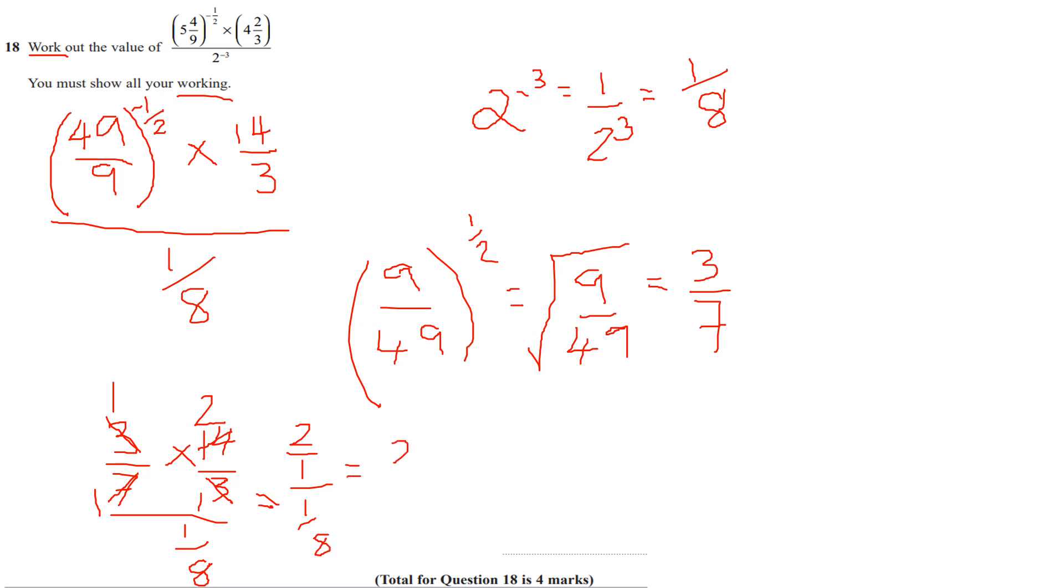Which is the same as saying 2 divided by 1 eighth. Now when you divide by a fraction, you multiply by its reciprocal. So dividing by an eighth is the same as multiplying by 8 over 1 or just 8. So I'll get 2 times 8, which is going to be 16. So our final answer is 16.